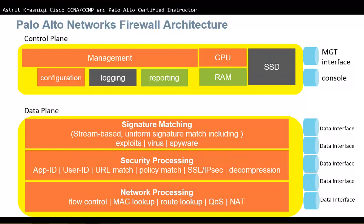And in the data plane we also have network processing, i.e., flow control, MAC address table lookup, route lookup, quality of service, and network address translation.